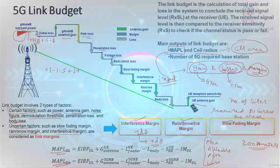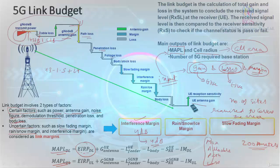We also calculate the MAPL for uplink. For downlink, you have the gain of the UE minus the feeder loss minus the body loss, which gives you the EIRP — Effective Isotropic Radiated Power. The EIRP represents how much effective power goes out of the antenna for the downlink, and similarly EIRP is calculated for the uplink.